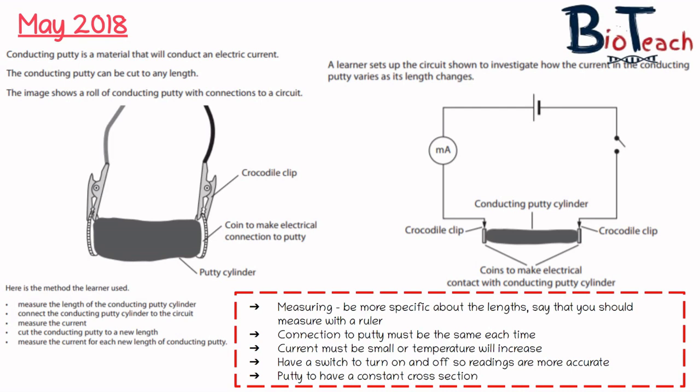Another point is that the putty should have a constant cross-section — if it's slimmer in one part and wider in another, that will affect the current passing through it, since the width of a conductor affects current. For each improvement you write down, make sure you explain why — for example, using the switch ensures results are more accurate, and specifying the ruler improves accuracy and precision.